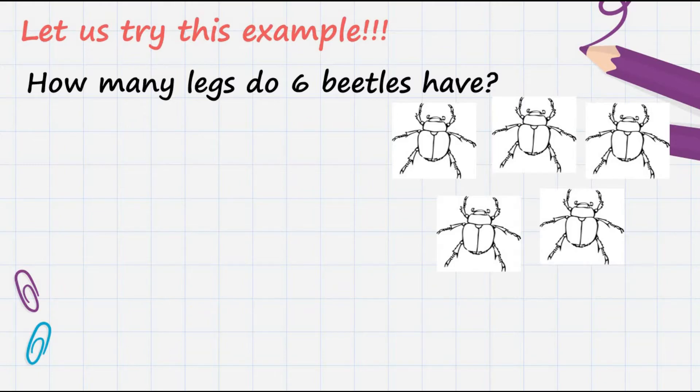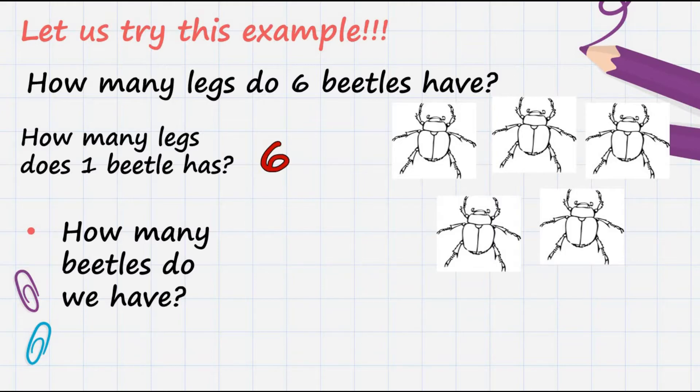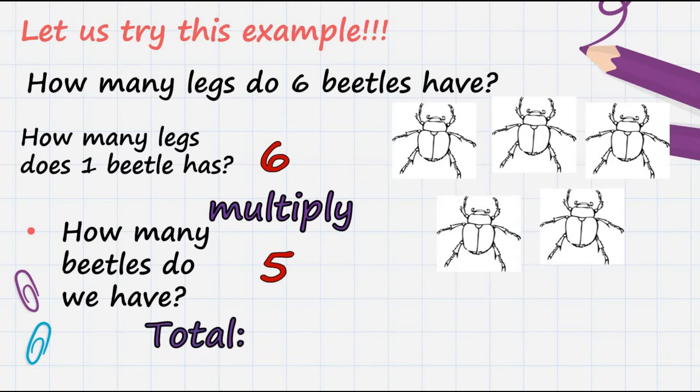Now, let's review the 2 questions. How many legs does 1 beetle have? Very good. 1 beetle has 6 legs. How many beetles do we have? Very good. We have 5 beetles. Now, we need to multiply 6 and 5. What is 6 multiplied by 5? Excellent.